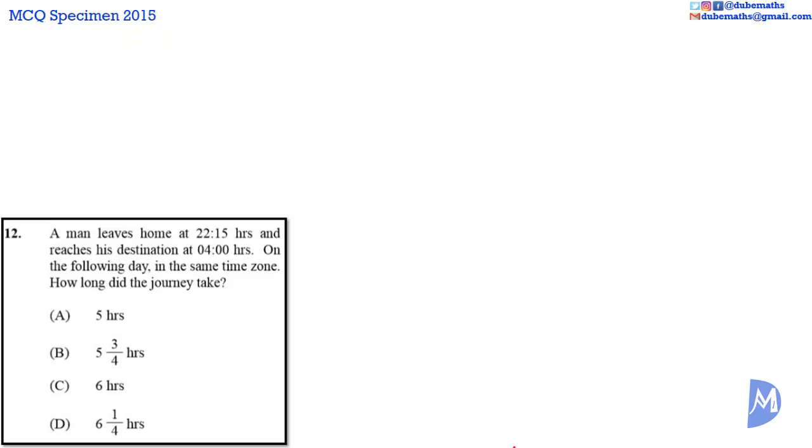This problem had a small error. There should be no period or full stop here. Thus, the question should read, A man leaves home at 22.15 hours and reaches his destination at 0.400 hours on the following day in the same time zone. How long did the journey take?